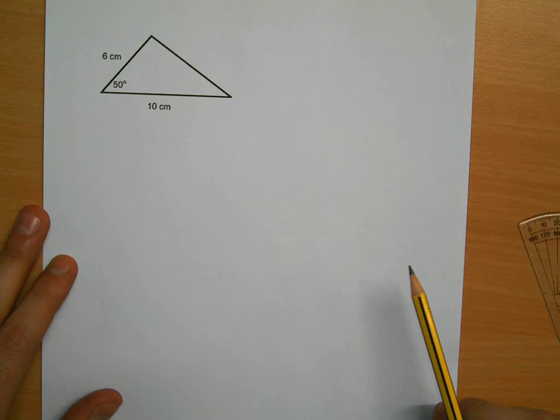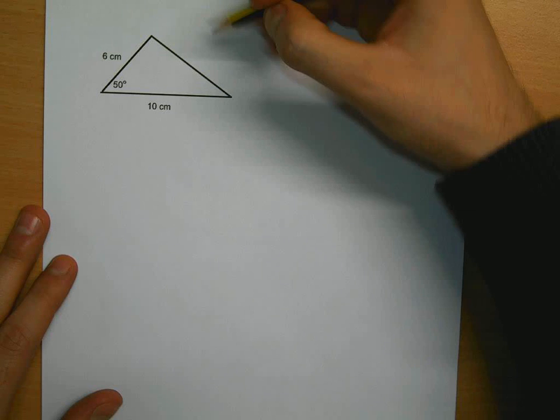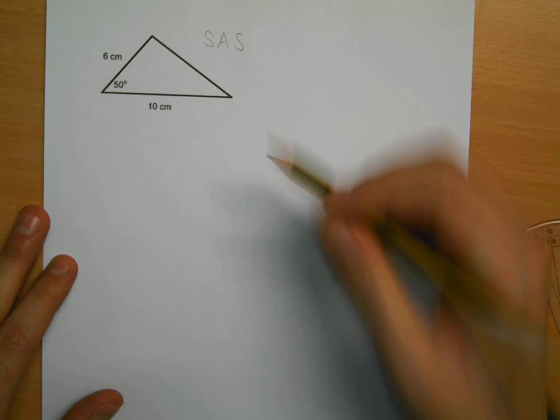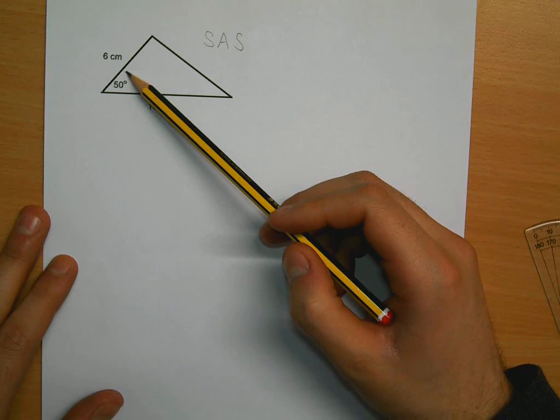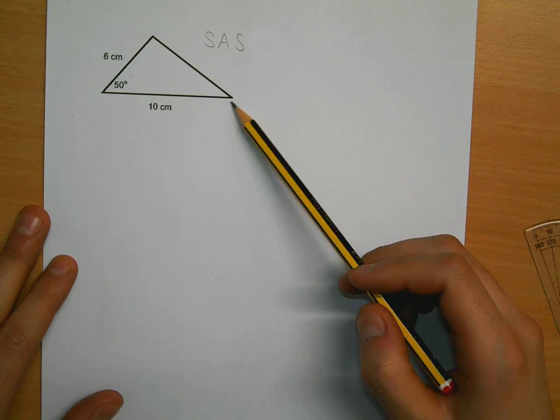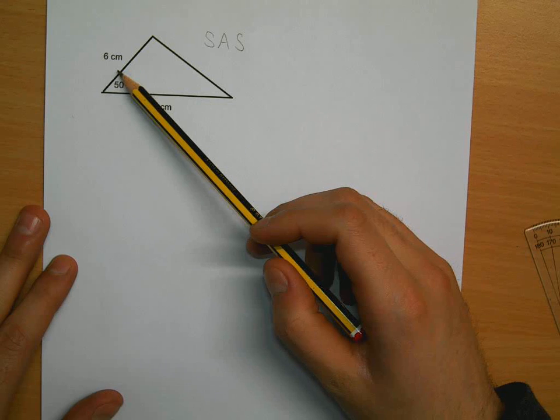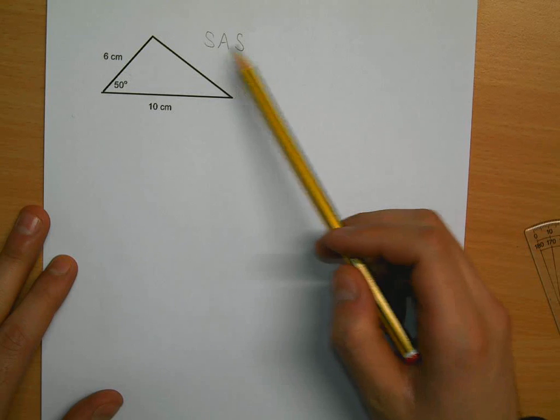This triangle is known as a side-angle-side triangle because we are given the length of a side, an angle, and the other side here. You will notice that the angle is between these two sides.